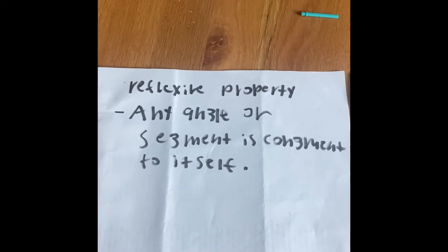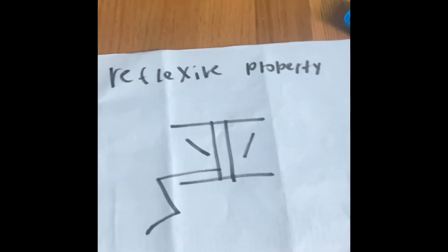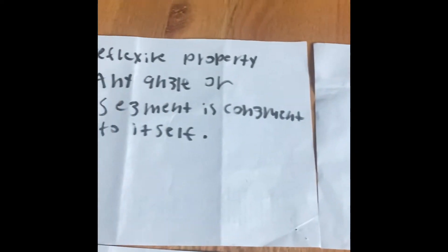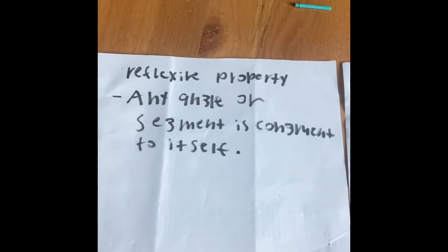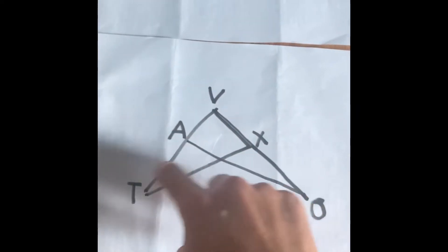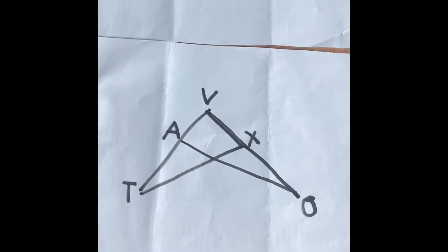Wait, what? But why do we have to do this video if we already know if an angle or segment is congruent to itself? Well, which of these angles seems to have two angles?